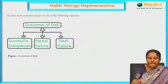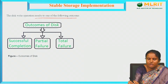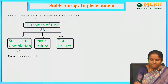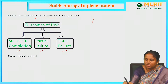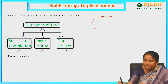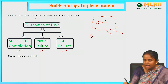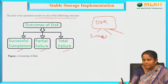The disk write operations result in one of the following outcomes. The outcome of a disk write is: successful completion, partial failure, or total failure. The data placed on the disk may result in one of these three cases — it may be successful, it may be a partial failure, or it may be a complete failure.